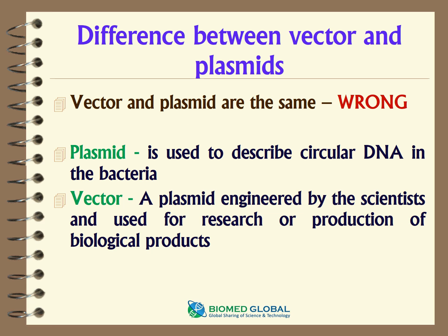An interesting fact about the two words plasmid and vector: people often think vector and plasmid are the same, but that is wrong. A plasmid describes circular DNA naturally found in bacteria, whereas a vector is a plasmid that has been engineered by scientists and is used for research or production of biological products.